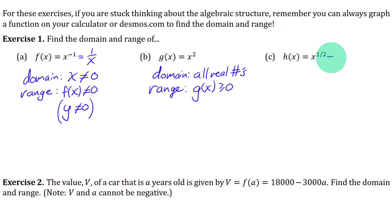x to the 1 half in part c is the same as the square root of x. You can draw a little 2 there if you want to show to see what happened to the 2. So that's a square root and you're only allowed to take square roots of positive numbers or 0. So the domain is x is greater or equal to 0.